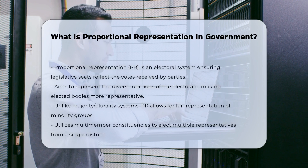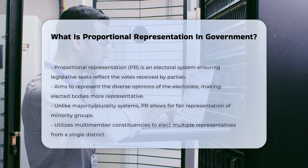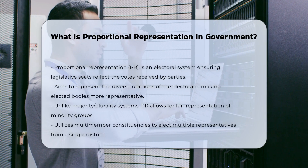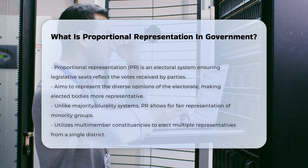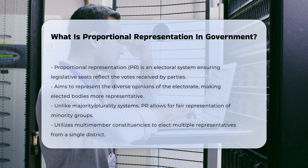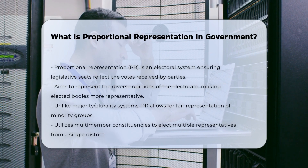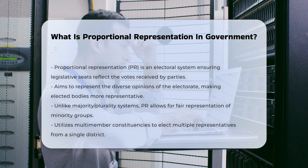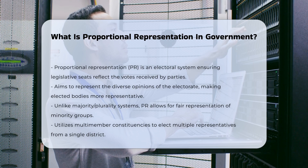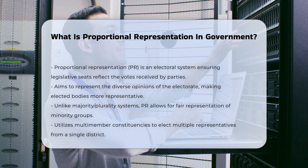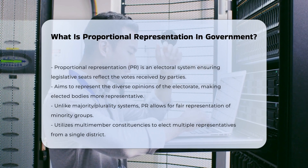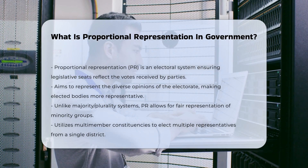Proportional Representation is an electoral system designed to ensure that the number of seats held by a political party or group in a legislative body is directly proportional to the number of votes they receive in an election. This system aims to reflect the full diversity of opinion within a country, making the elected body more representative of the electorate's preferences.